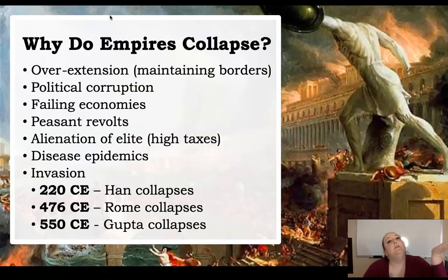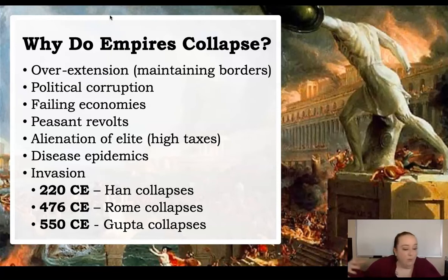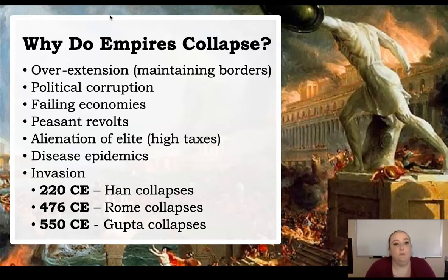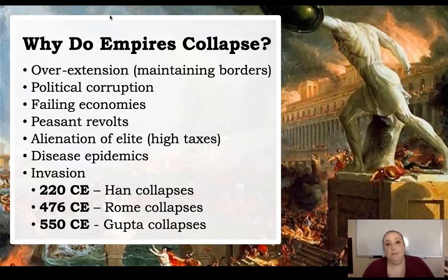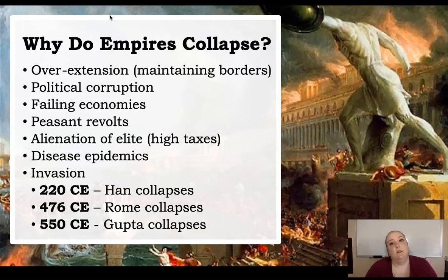But what goes up must go down. Why did these empires collapse? They overextended — their borders got too big and they couldn't maintain them. Or it came down to corrupt politicians, failing economies, peasant revolts, overtaxing elites, disease epidemics, or invasion. There were many different reasons these great empires fell apart, but in a way it led the way for more empires to come around.